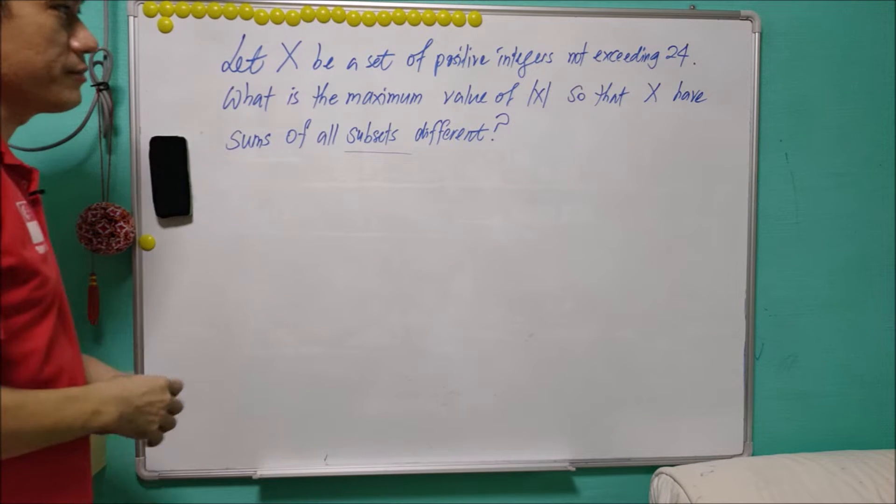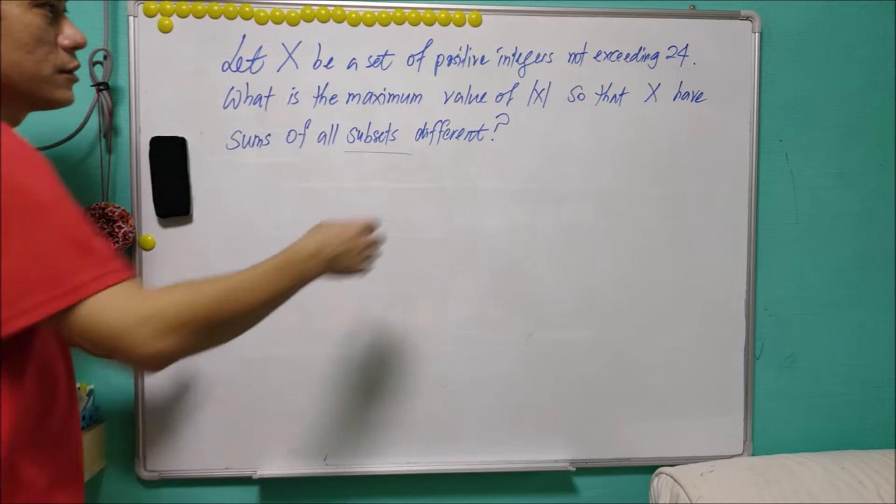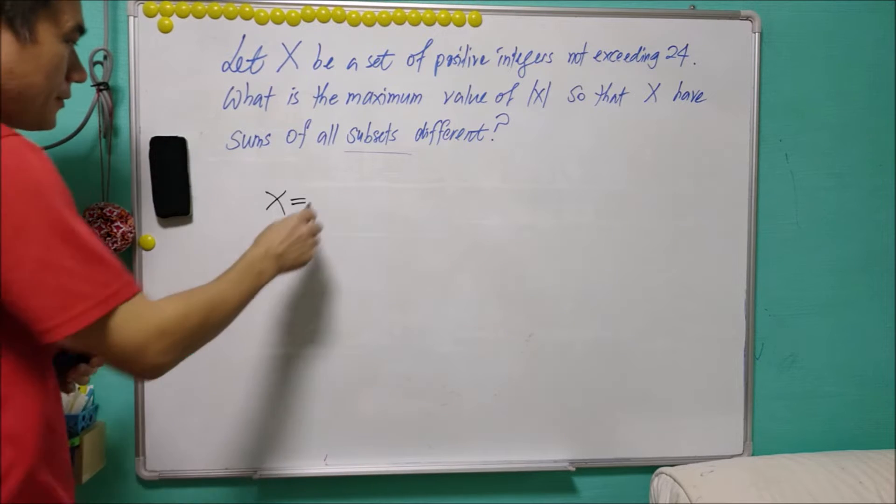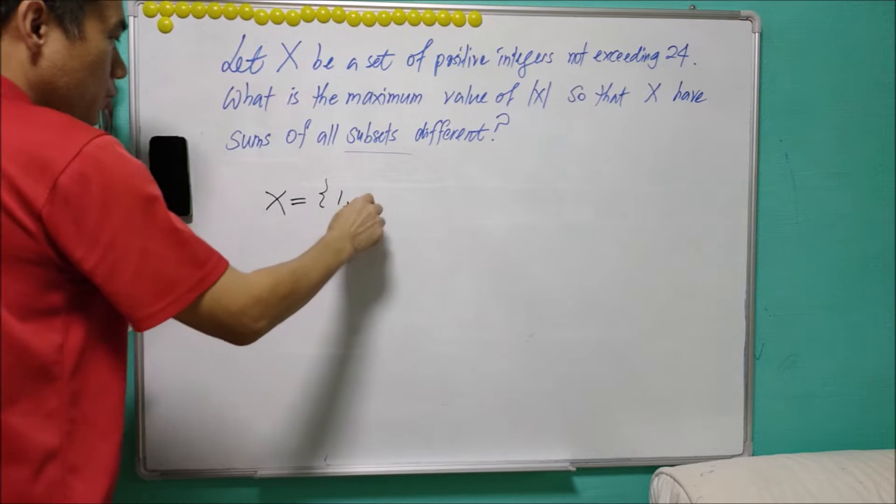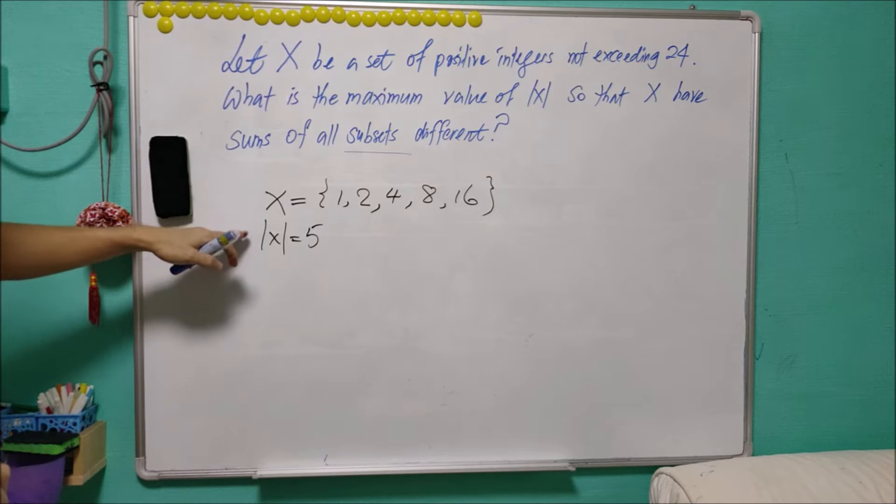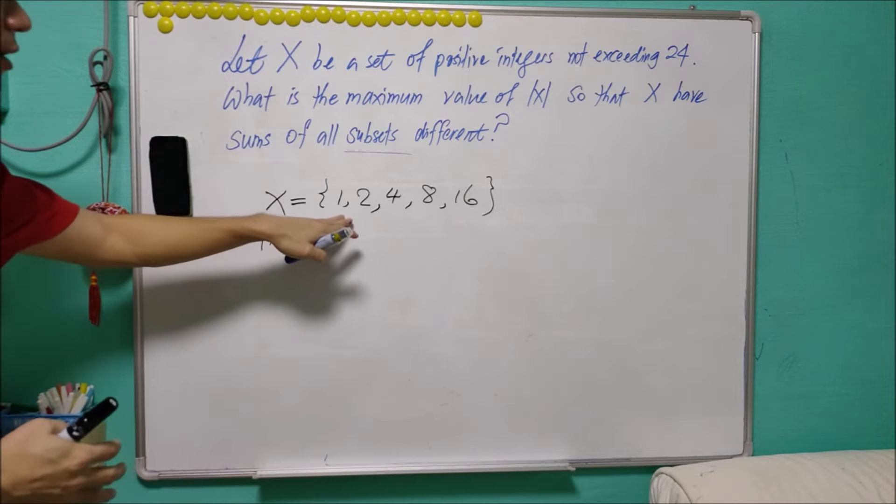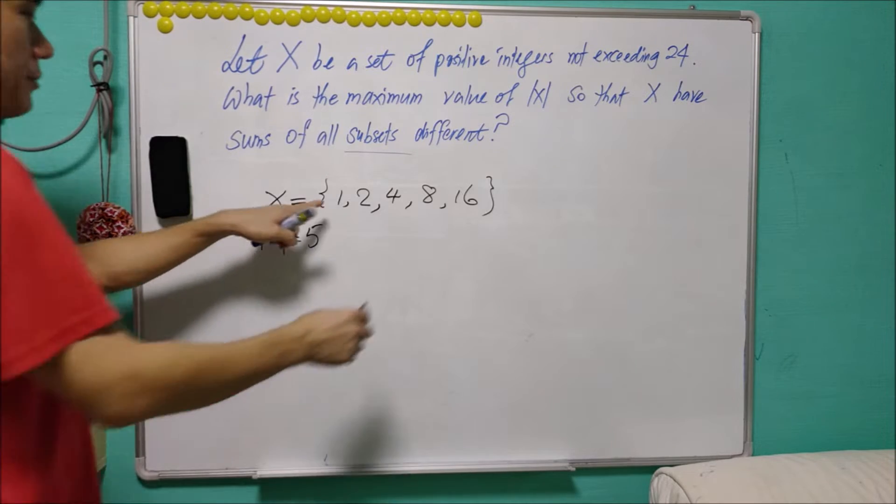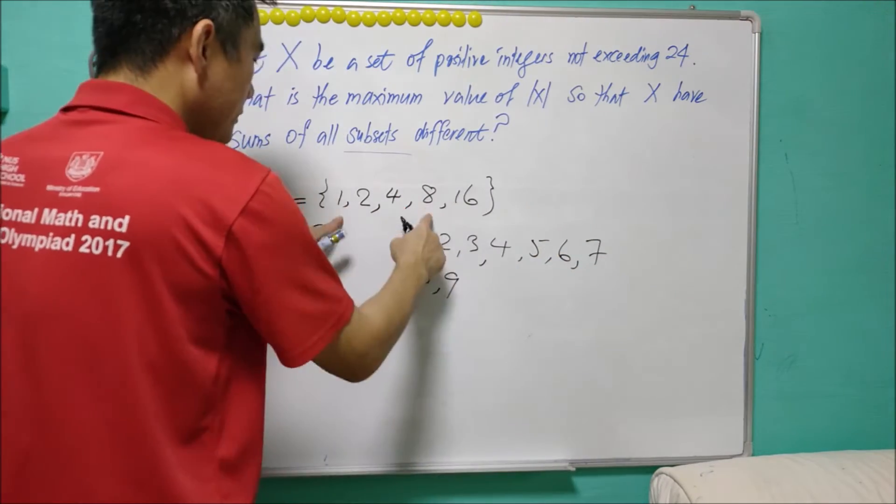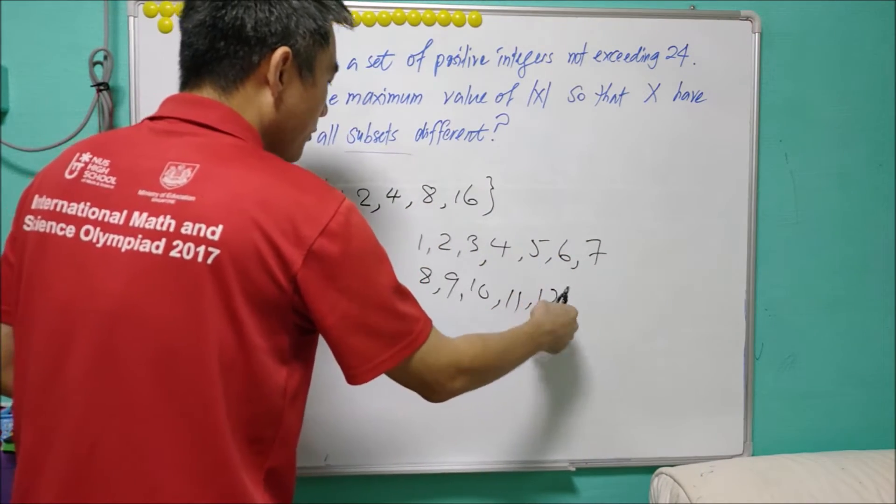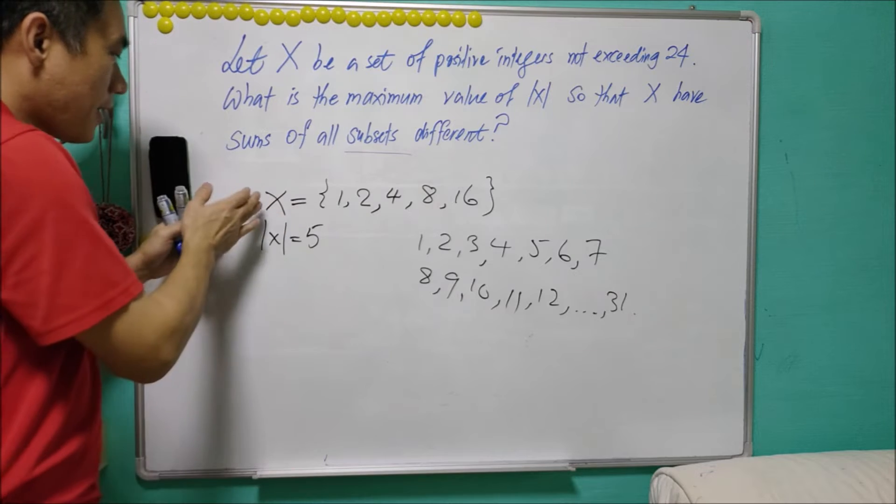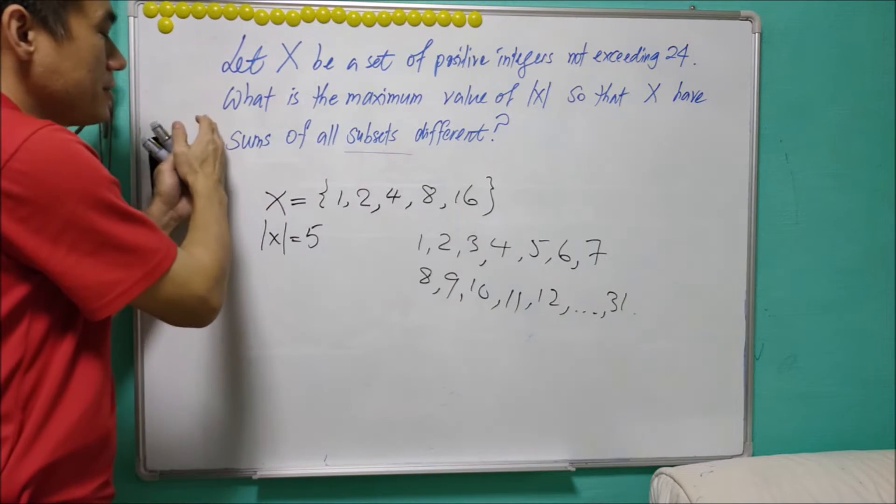When I came across this question many years ago, it was not difficult for me to construct X with 5 elements that satisfy the condition. That is {1, 2, 4, 8, 16}. There are 5 elements in X. What are the possible sums of all subsets? It can be 1, 2, 3, consisting of the sums from 1 all the way to 31.